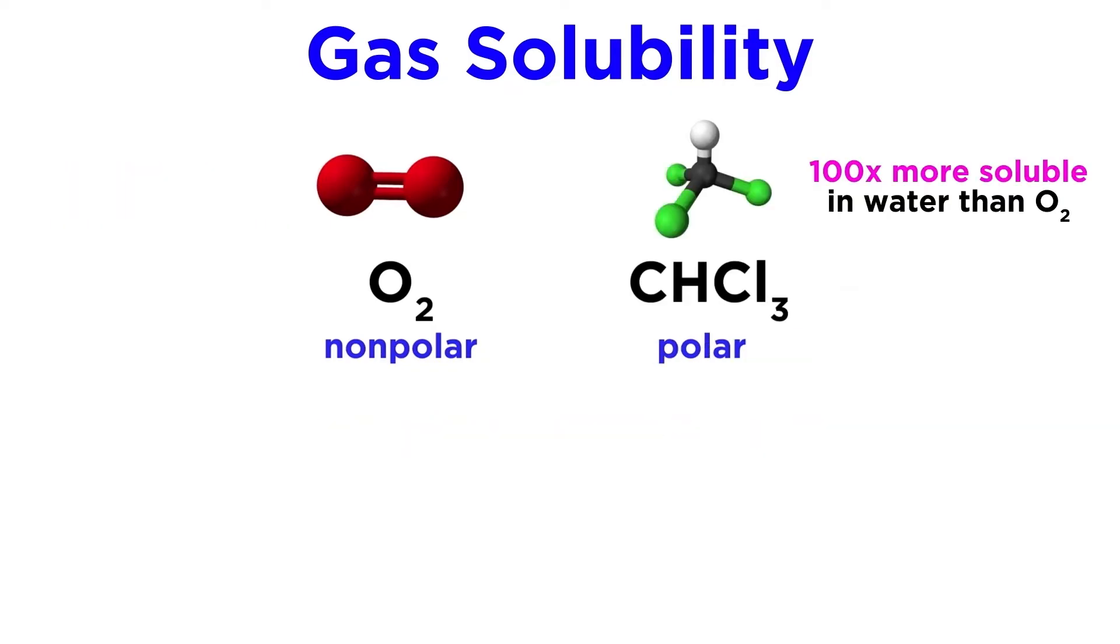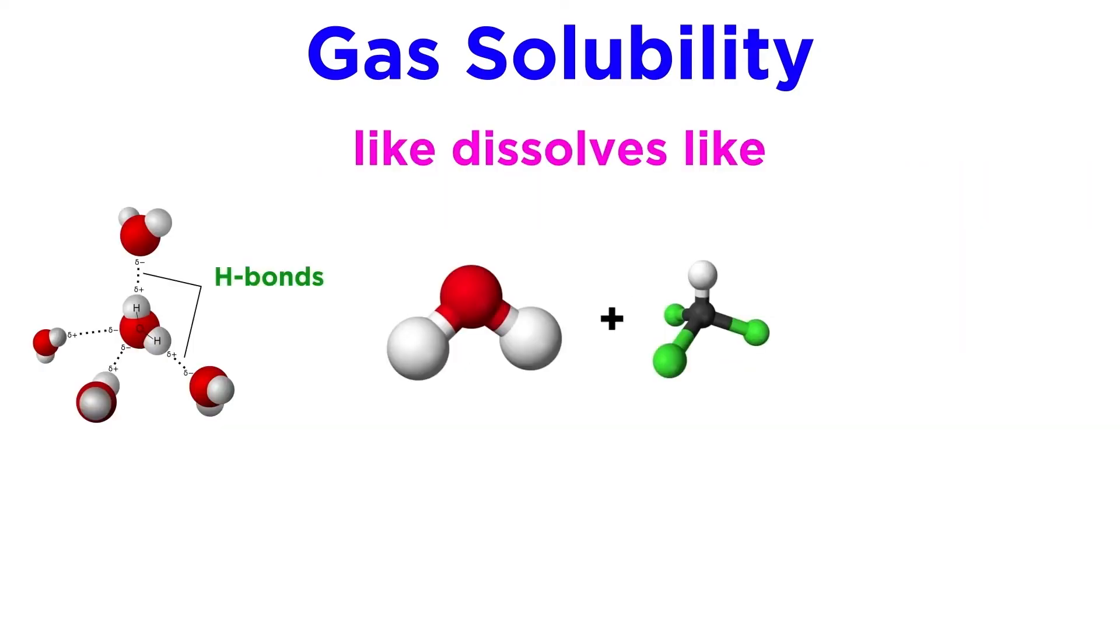But oxygen is still one hundred times less water-soluble than chloroform, because chloroform can participate in actual dipole-dipole interactions with water, which are possible because of the formal dipole in the molecule. This is a much stronger interaction, which results in a much greater solubility. Since the dipole on every water molecule is interacting with the dipole on other water molecules, substances that can best approximate these types of interactions will be able to mix the most effectively amongst the water molecules, which means a greater solubility.